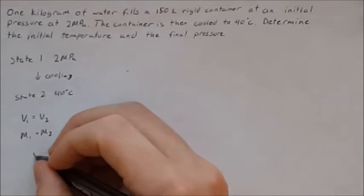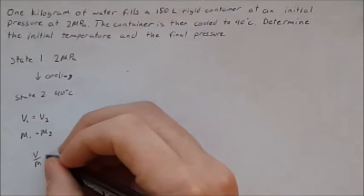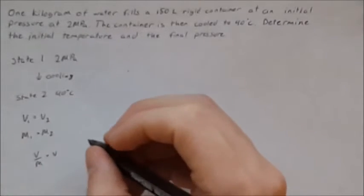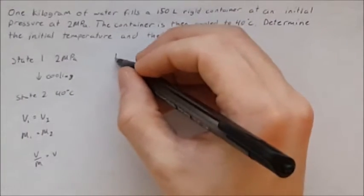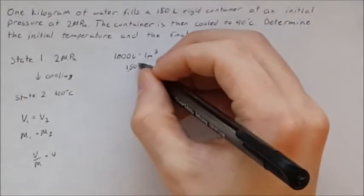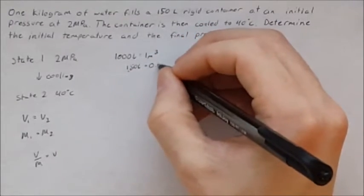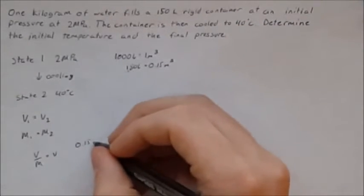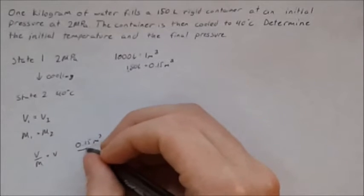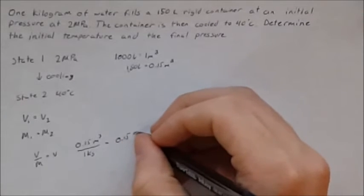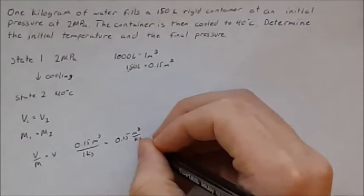So a specific volume is volume per unit mass and that's going to be little v. Since volume and mass remain constant we have 150 liters where 1,000 liters is equal to 1 meter cubed. So 150 liters is equal to 0.15 meters cubed. So we have 0.15 meters cubed divided by 1 kilogram will equal 0.15 meters cubed per kilogram as the specific volume.